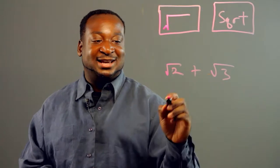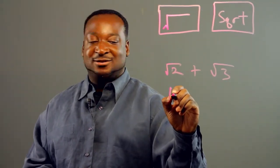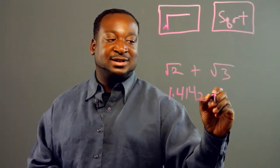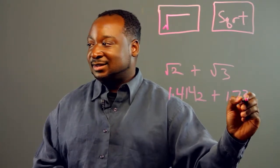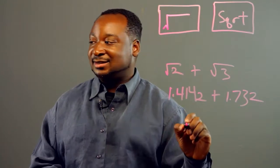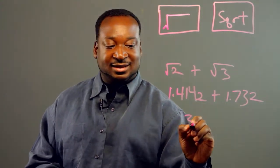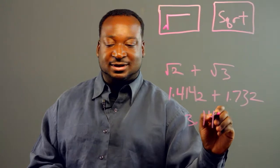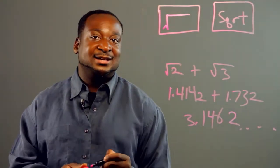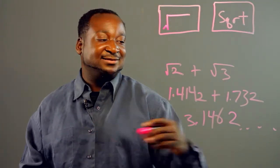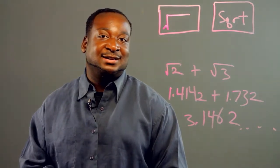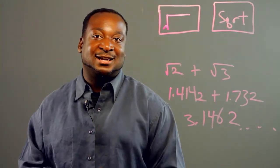When you break these down, you get the square root of two, which is approximately 1.4142, plus 1.732. And when you get the answer, it's about 3.1462 and so on. The calculator will give you the extended decimal places. And that's how you do it — this is how you calculate radicals using the calculator.